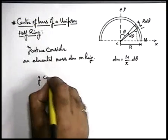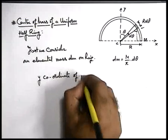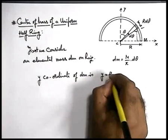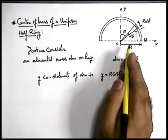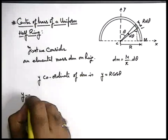Or we can find the y-coordinate of dm is y equals r cos theta. And if we are required to find the y-coordinate of center of mass of the system, we can write: